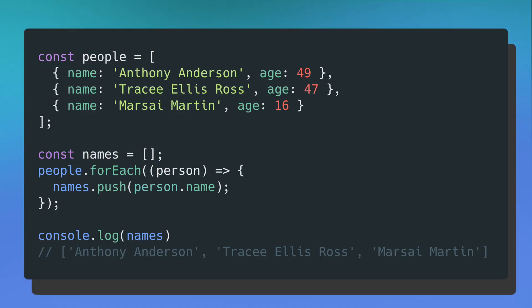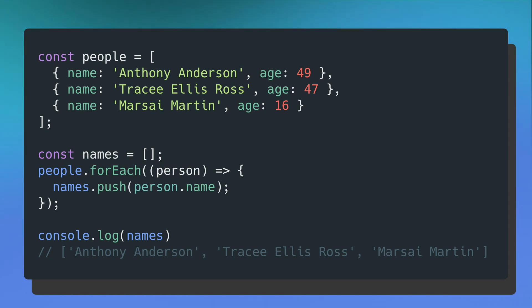So as you can see in this example, I have an array called people. There are three objects in this array where each object has a name and age key. Below this array, I have a brand new empty array called names. Then right below that, I call the forEach method on my people array. The forEach method takes a callback, and inside my callback function, I push the person object's name property into my names array. So forEach is going to step through each object in the people array and push just their names to my names array. Then I can print out my names array to see just the names of each people object.